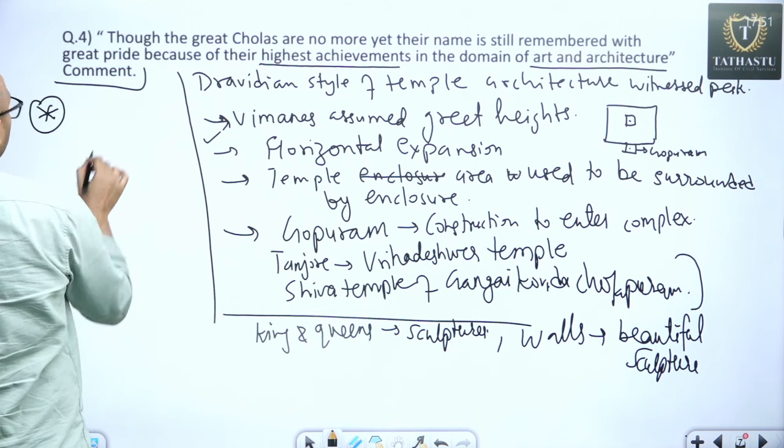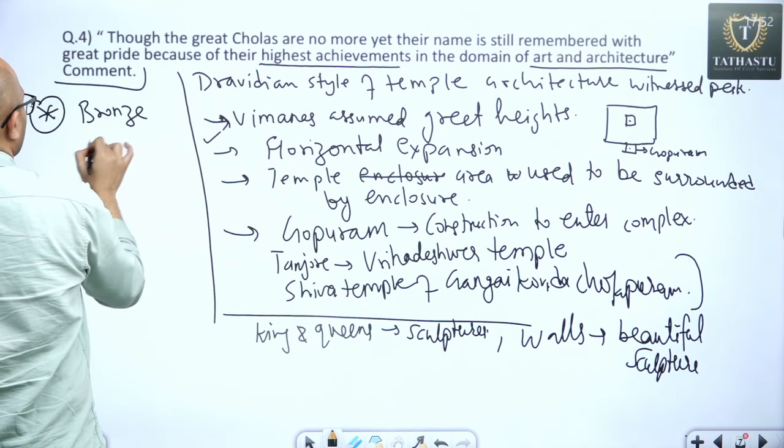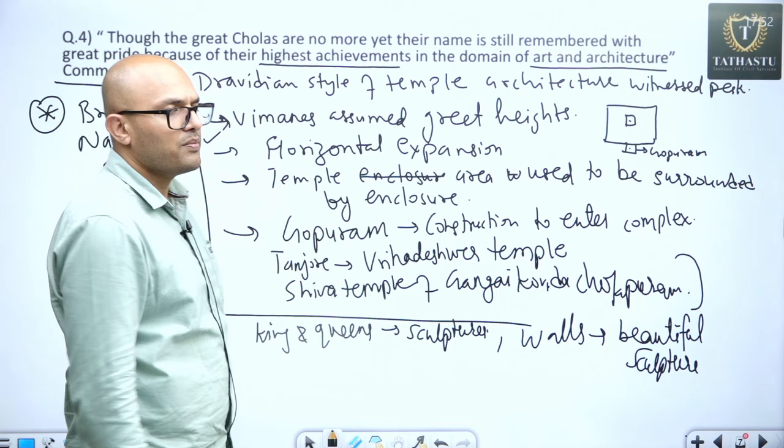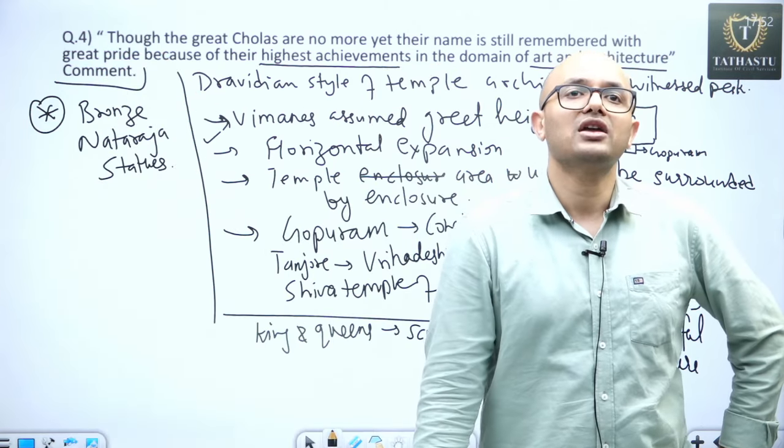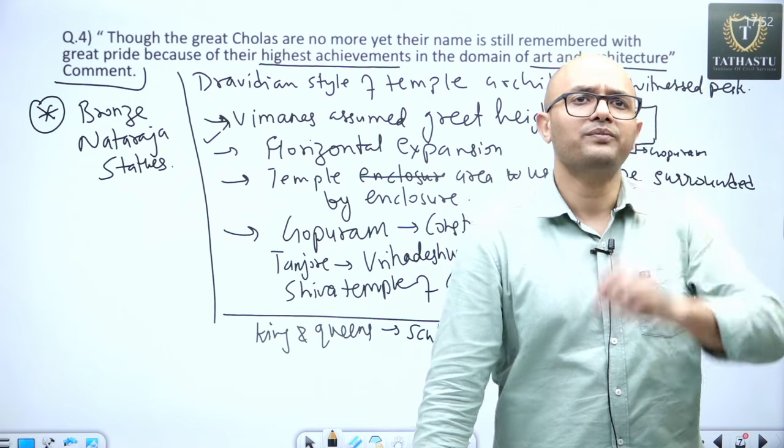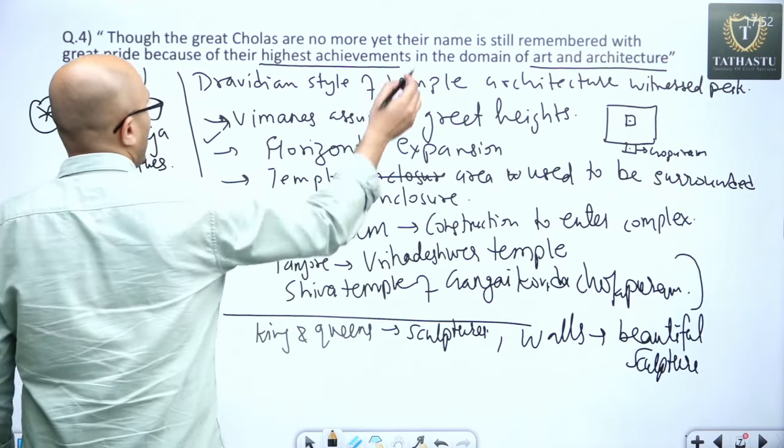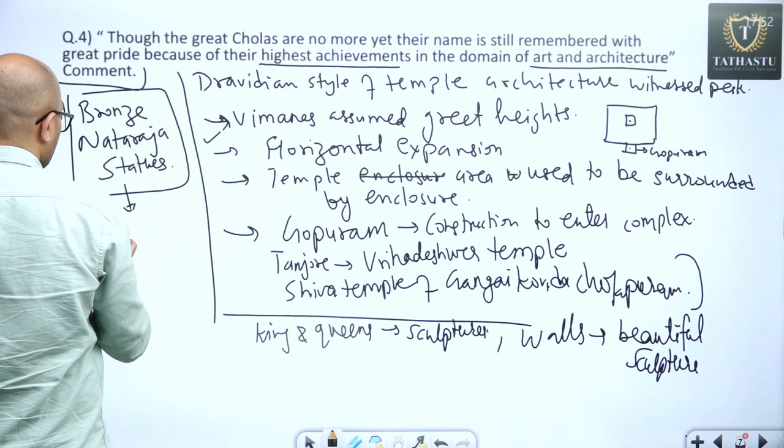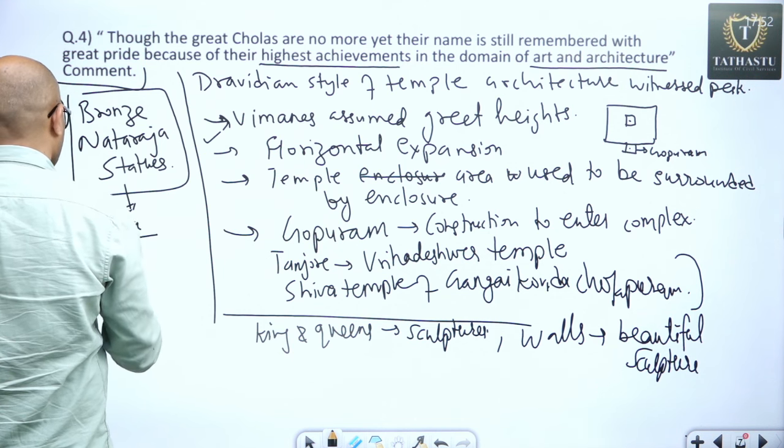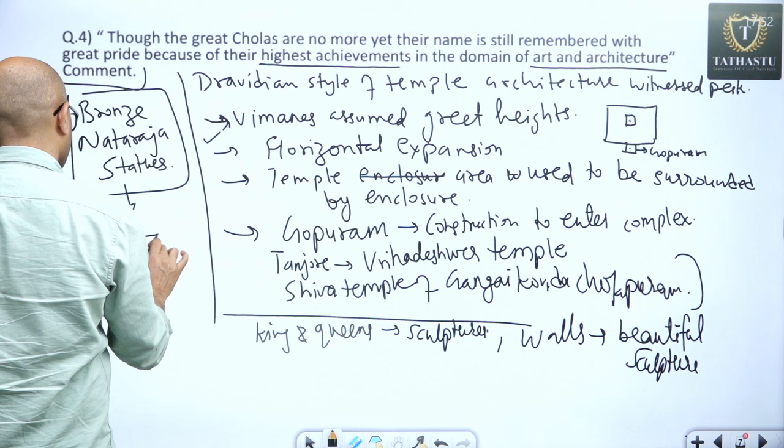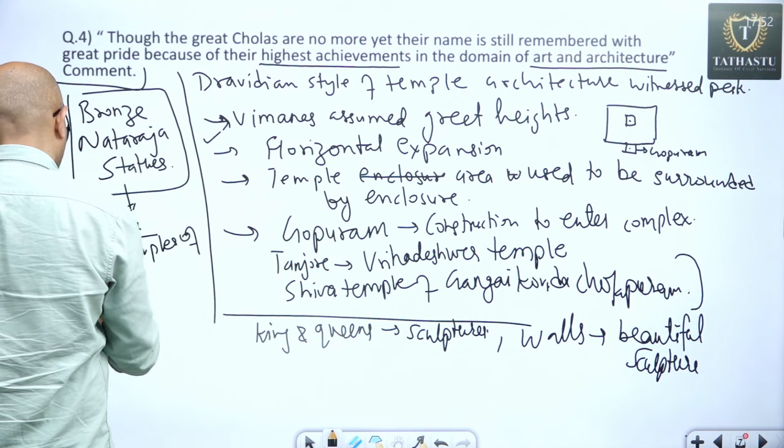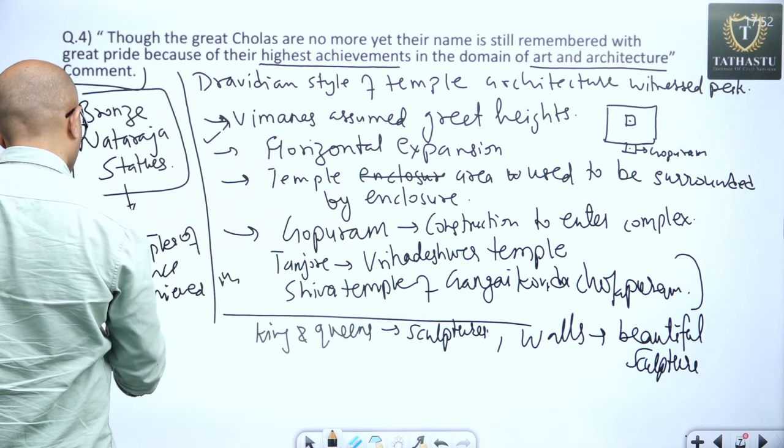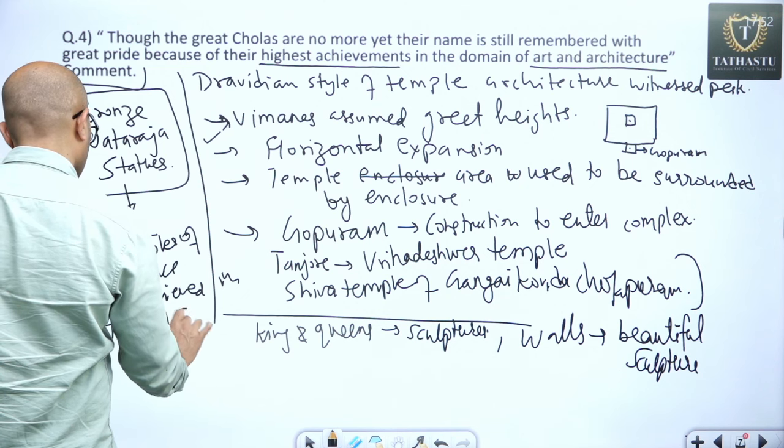But most important aspect, bronze Nataraja statues, bronze Nataraja statues, reflects remarkable craftsmanship achieved during the time of Cholas. They are the best examples of excellence achieved under the Cholas in sculpture making, bronze Nataraja statues of Chola time period. Example of their refined example of excellence achieved in field of sculpture making.